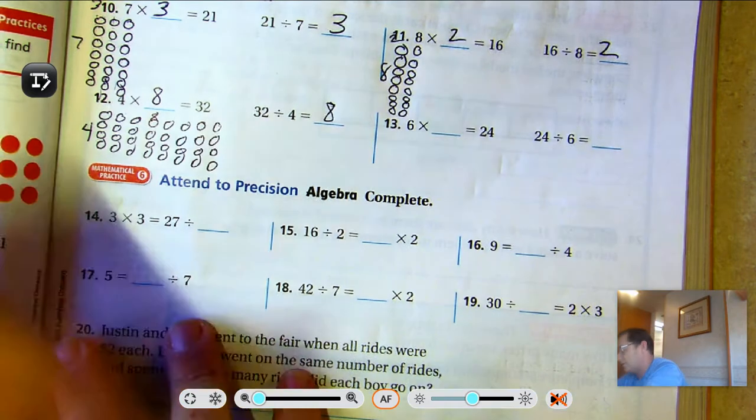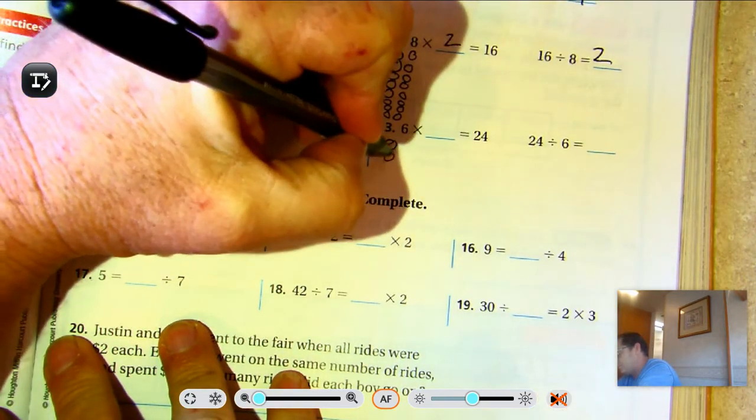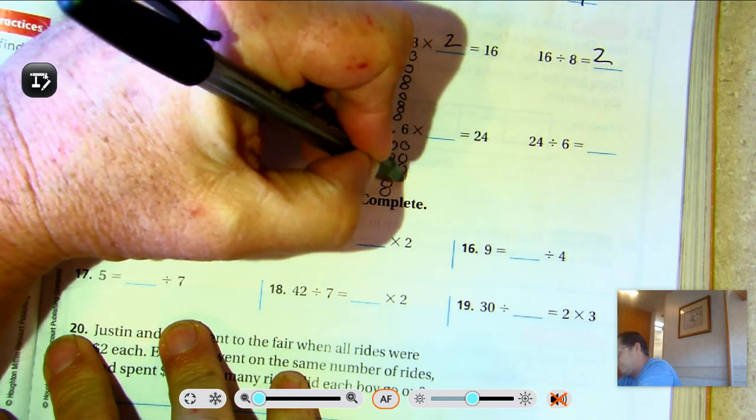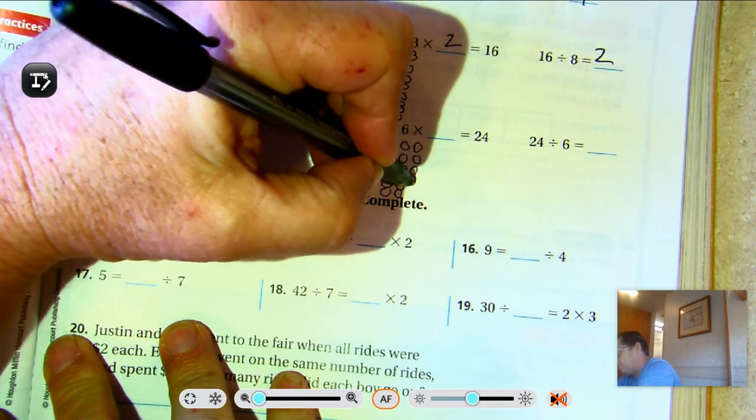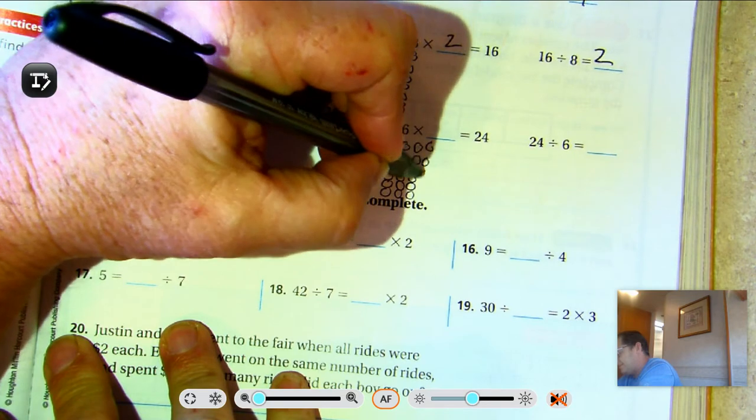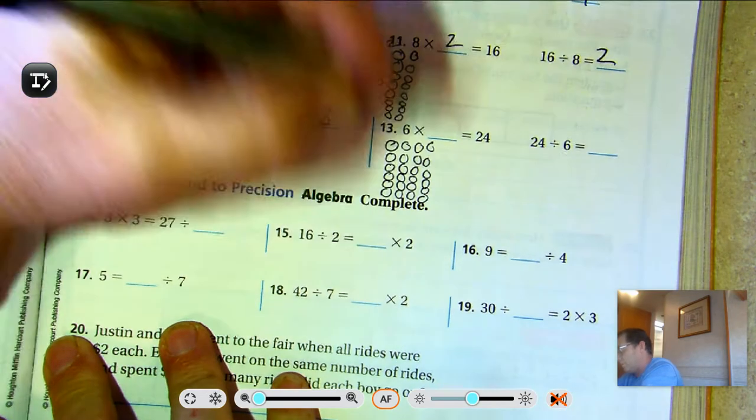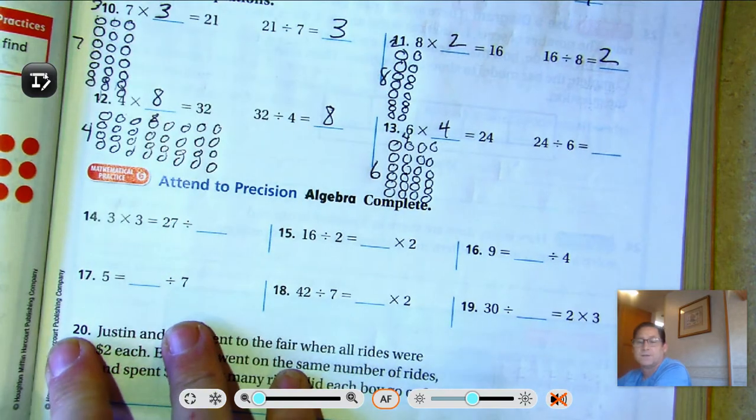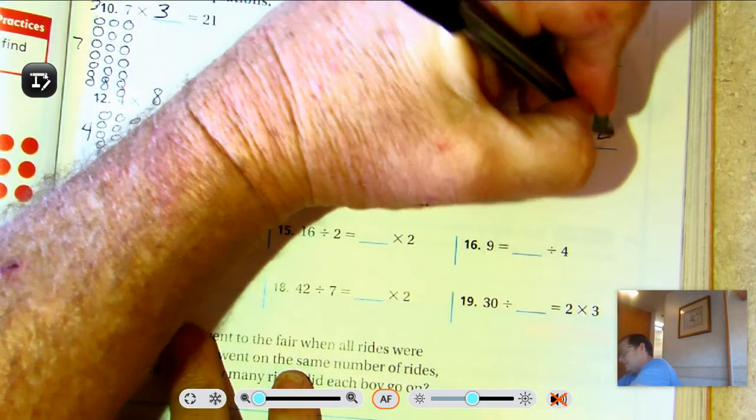Six times what is 24? Six, twelve, eighteen, twenty-four. Six rows of four. So 24 divided by 6 is 4.